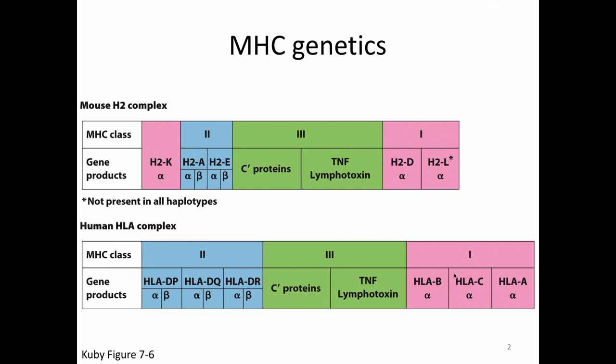In general, all of these proteins are known as the MHC proteins. MHC stands for Major Histocompatibility Complex — they are important for histocompatibility, otherwise known as transplant reactions. However, the people who discovered these proteins in humans and in mice did so through totally different types of experiments, so the nomenclature for human MHC and mouse MHC are different.